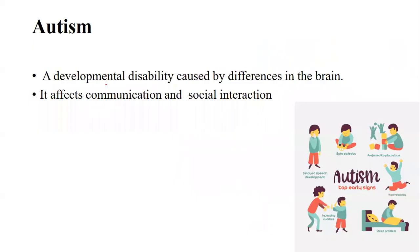In tuberous sclerosis, there are benign, non-cancerous growths in the brain. Some autistic children have difficulty communicating or maintaining social interaction with others.